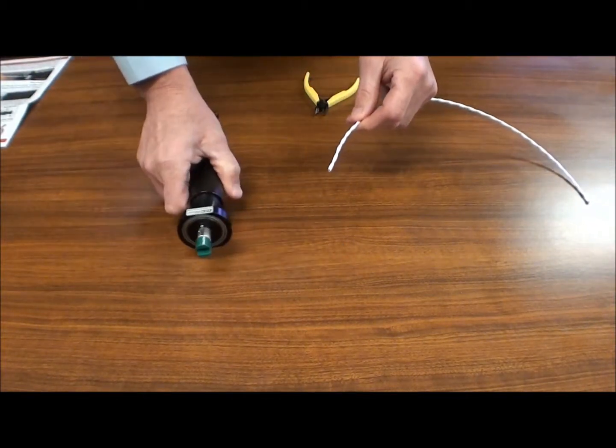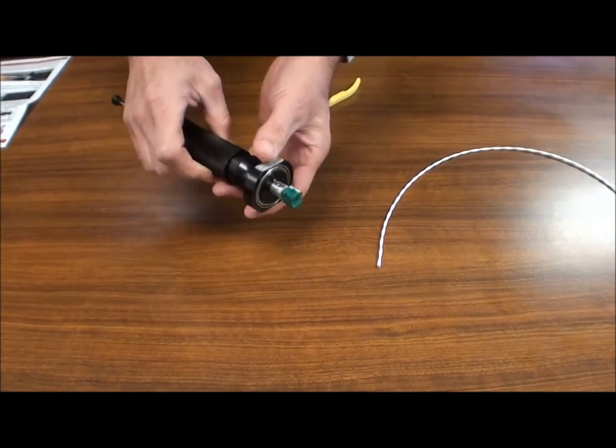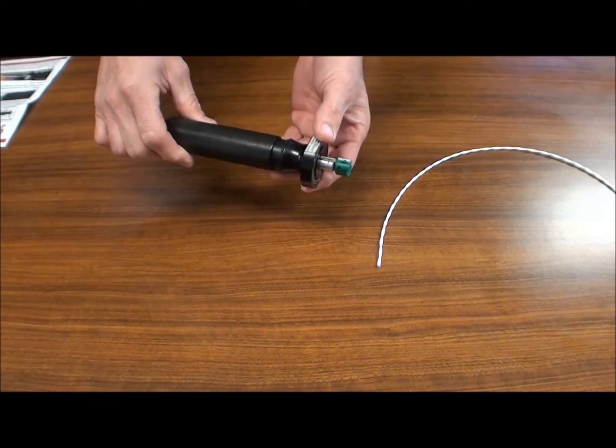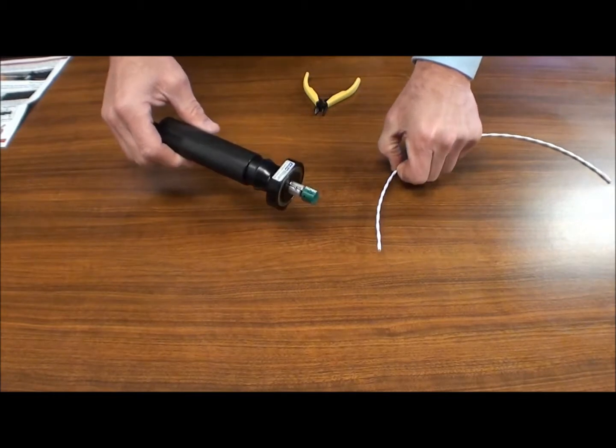Okay, we're going to demonstrate the twist strip, the TSK7000QC. It is a twist strip tool which is used for shielded twisted pair. It can also be used for single or multi-conductor coax conductor type cable.